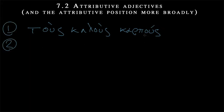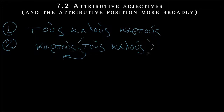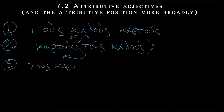Another way of writing the attributive is putting the noun first, then following that up with the article — which refers back — and then the attributive adjective: 'fruits, the ones which are good.' This functions almost like a relative clause, giving us more information about those fruits. And finally, a third option: we can double up the definite article — tous karpous tous kalous.